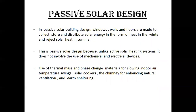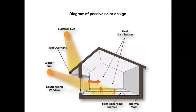The first design used in zero energy buildings is passive solar design. In this design, building windows, walls, and floors are made to collect, store, and distribute solar energy as heat in winter and to reject solar heat in summer. This is passive solar design because, unlike active solar heating systems, it does not involve the use of mechanical and electrical devices. It also uses thermal mass and phase change materials for storing and moderating indoor air temperature swings, solar cookers, chimneys for enhancing natural ventilation, and earth sheltering. This diagram shows the passive solar design, illustrating south-facing windows through which sunlight enters the building for lighting in both summer and winter seasons.